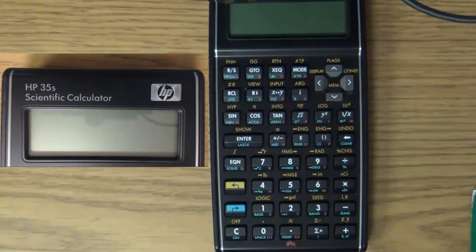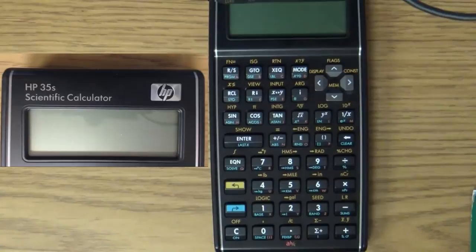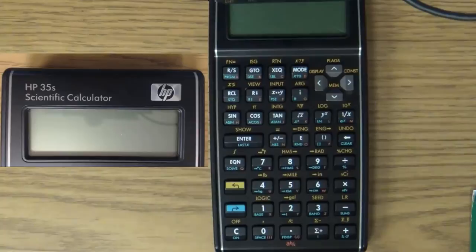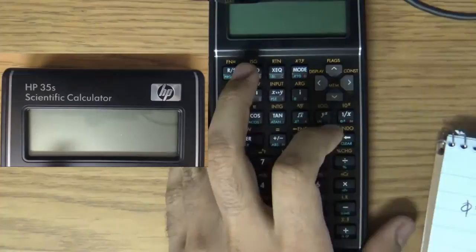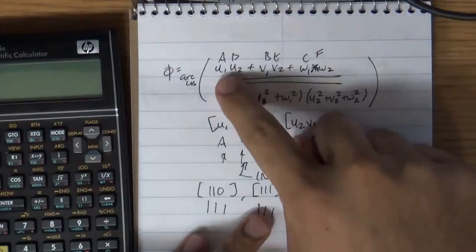Hello YouTube. Today I thought I'd do a short programming tutorial. Actually, it's not going to be that short, but it's a basic programming tutorial on how to find the angle between two vectors using the program functions of the HP35S. Now, you could easily do this by hand. It's a simple equation. I mean it looks a little bit involved, but really it's not too bad.